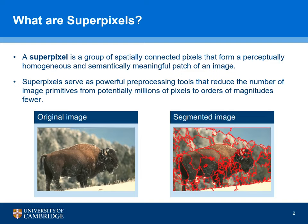Firstly, what are superpixels? A superpixel is a group of spatially connected pixels that form a perceptually homogeneous and semantically meaningful patch of an image. They serve as a powerful pre-processing tool that reduces the number of image primitives from potentially millions of pixels to orders of magnitudes fewer.